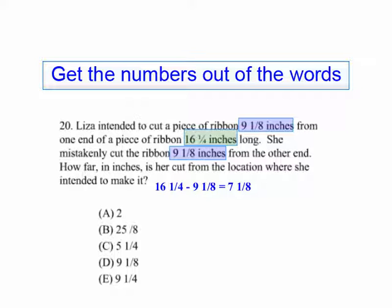Since 1/4 is 2/8, that will give us 7 1/8. She intended to be 9 1/8 inches in, so 9 1/8 minus 7 1/8 is 2 inches off.